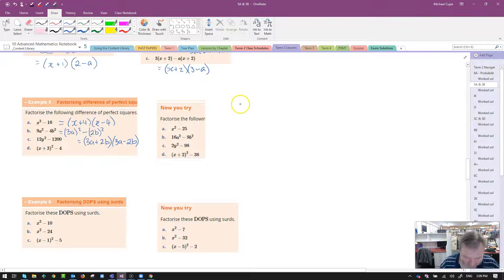Favorite rule in maths. I might have to do example C over on the side here. 12y squared minus 1,200. If there's a common factor, take it out first. Always our first step whenever we're trying to factorize. Oh look, and that helped nicely, didn't it? Because 100 is 10 squared. So this is going to be 12 outside of y plus 10 times y minus 10.